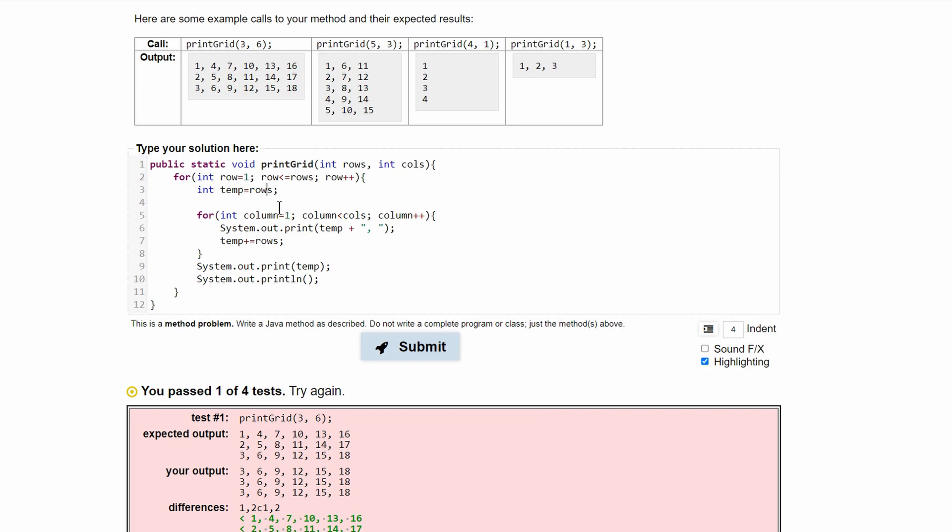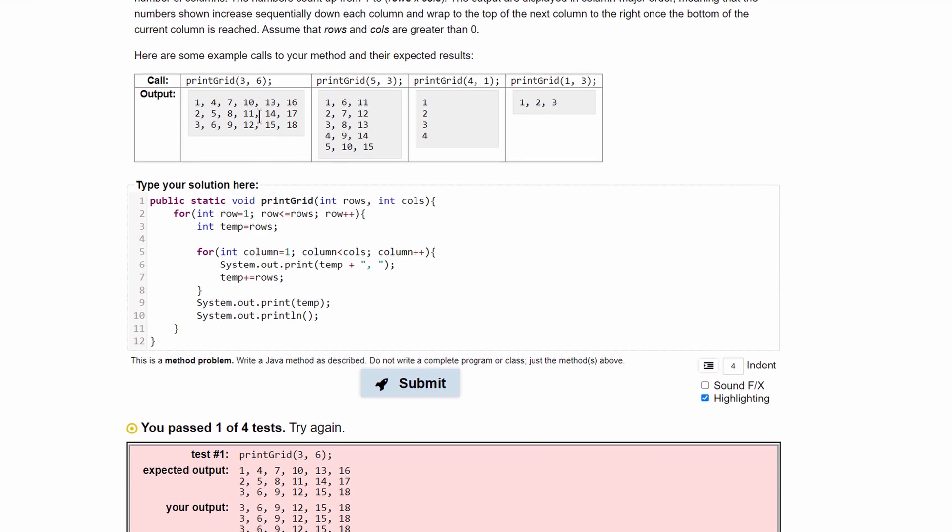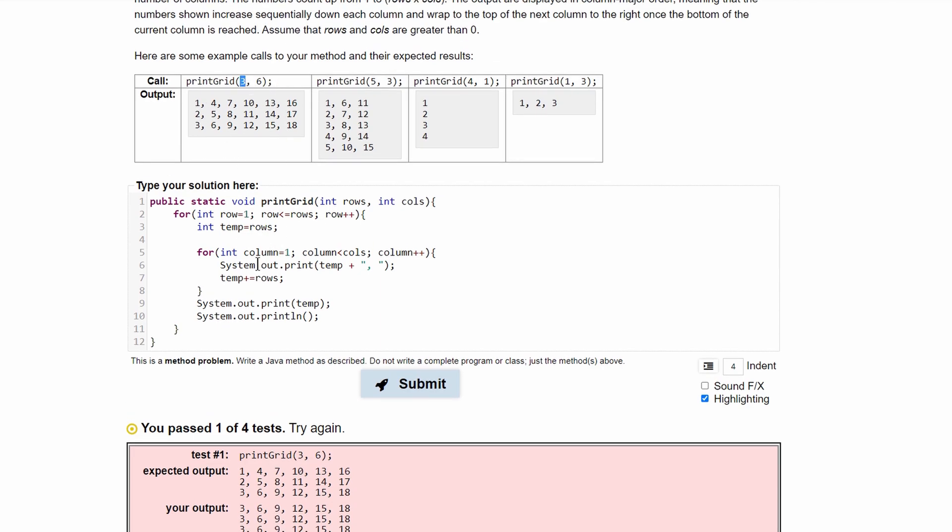And the issue is that I set temp equal to rows right here. This should not be initialized to rows because rows is a set number and needs to start at one. So this is actually just going to be row. And this one's fine because the amount added depends on the row. However, the value at which it starts at is always going to be one or two or three depending on this value right here.